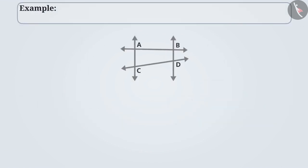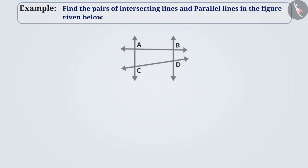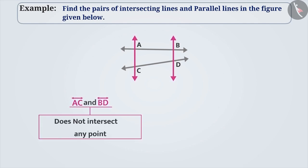Next example: find the pairs of intersecting lines and parallel lines in the figure given below. As we can see, the lines AC and BD do not intersect each other at any point. Even if we extend both the lines AC and BD, they will never intersect. Hence, the lines AC and line BD are parallel lines. Apart from these, there are no two lines in the given figure which are parallel lines.